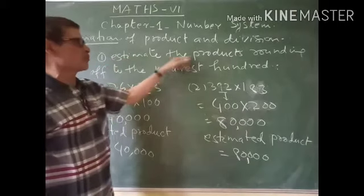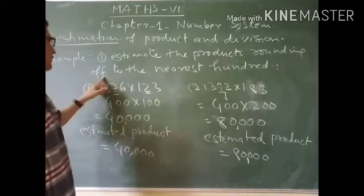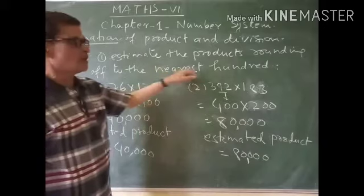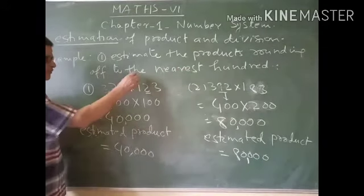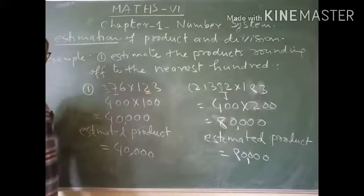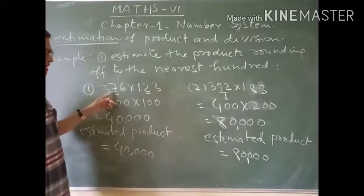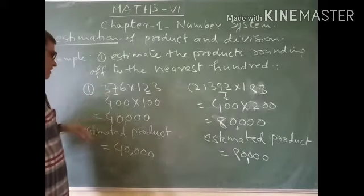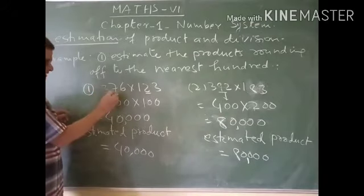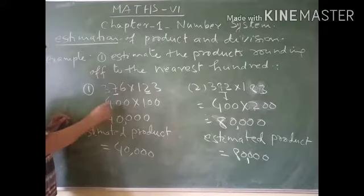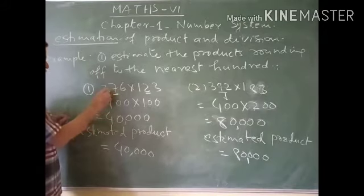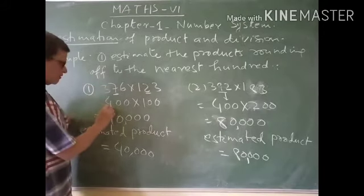We have to estimate the product rounding up to the nearest hundred. We have to observe the digit at the tens place. In this product, 7 is at the tens place. Therefore, 1 should be added with 3 and this will become 400.